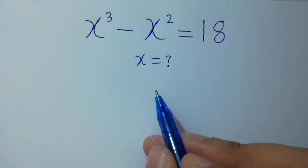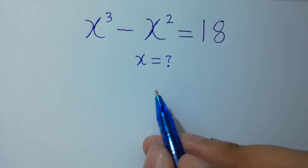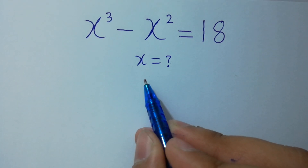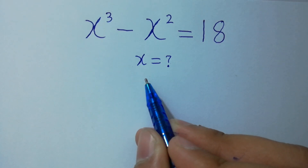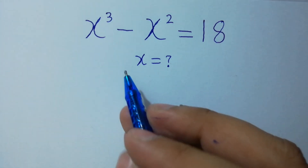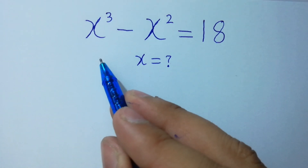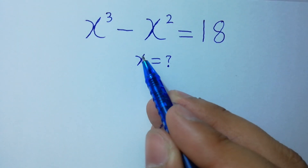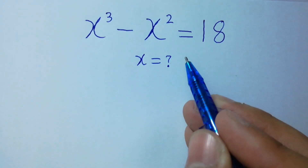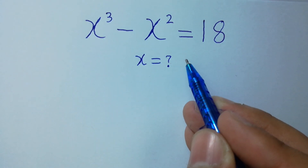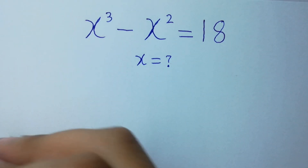Hello friends. Find the value of x if x cubed minus x squared equals 18. Let's solve it.